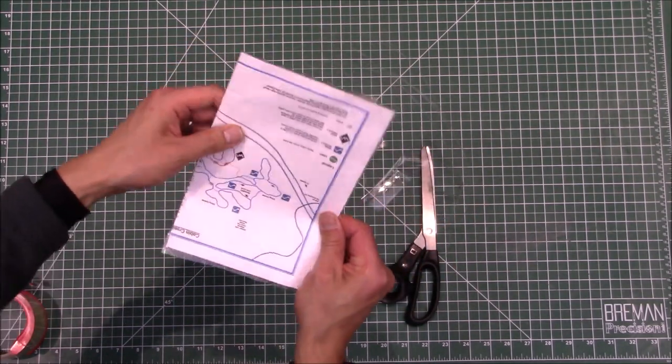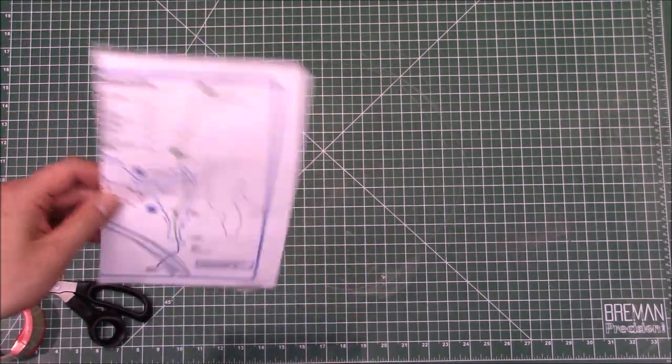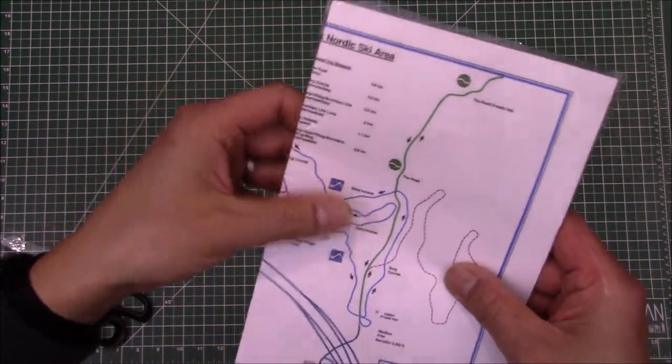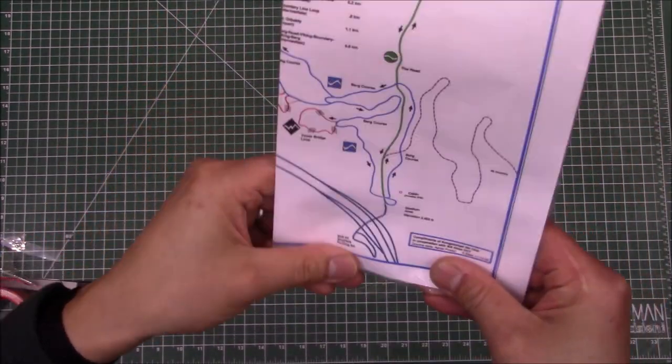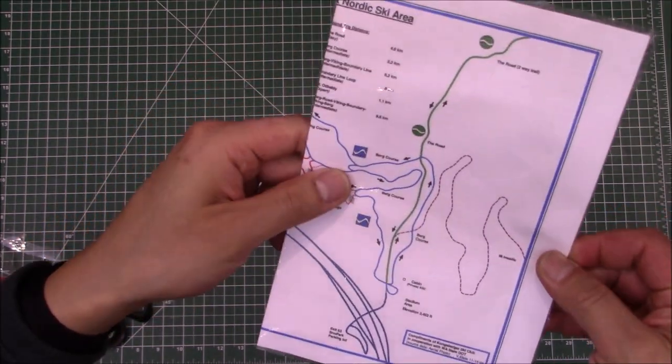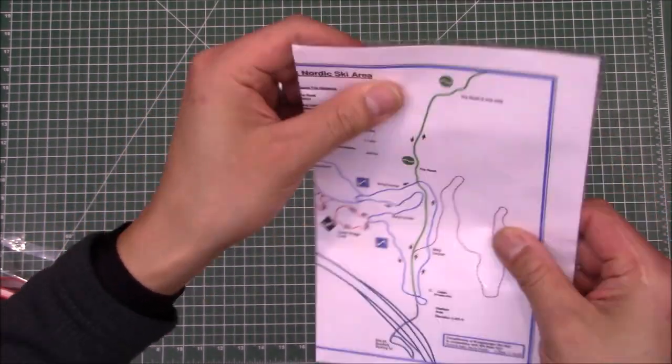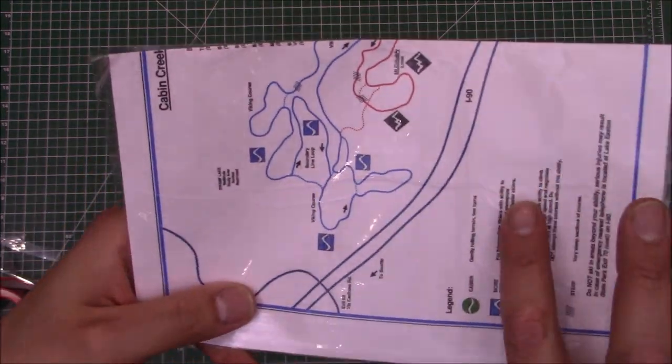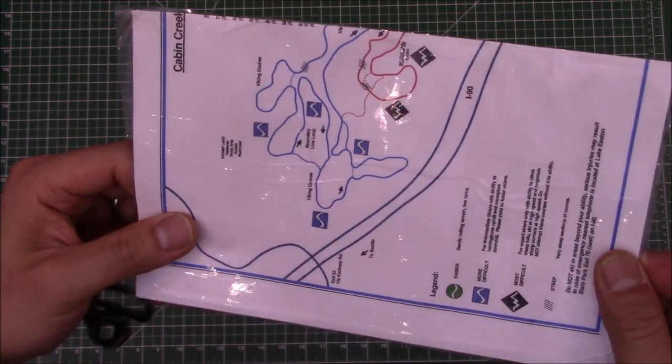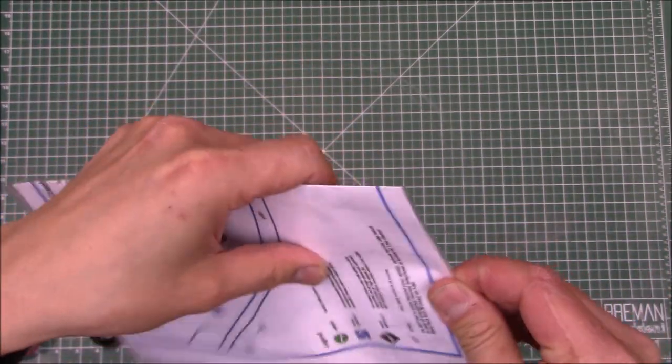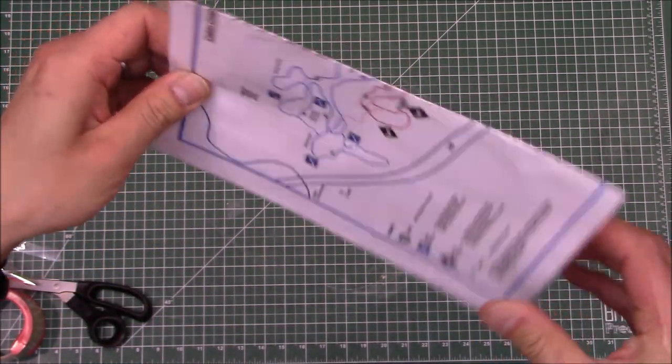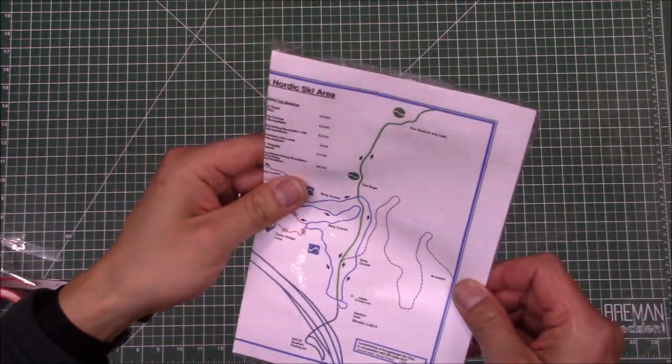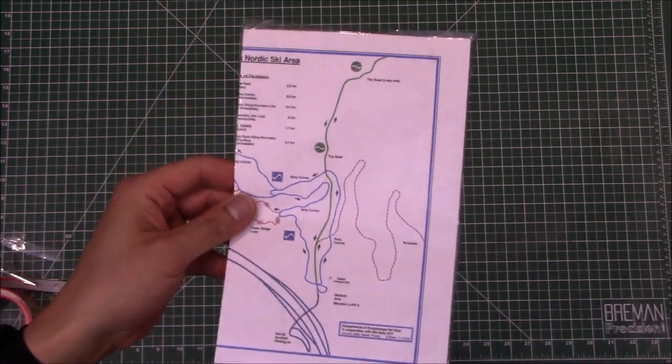So there you have it. We've got this nice, quote-unquote laminated document. Look at that, it's really beautiful. You can't actually really tell that it was just done by packing tape. Again, I didn't do this the most clean. You can kind of see here there's a couple little creases in the document because I wasn't super careful. But if you are careful, you can really minimize that and get something that looks quite nice.